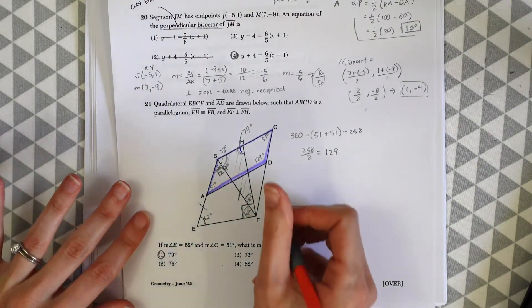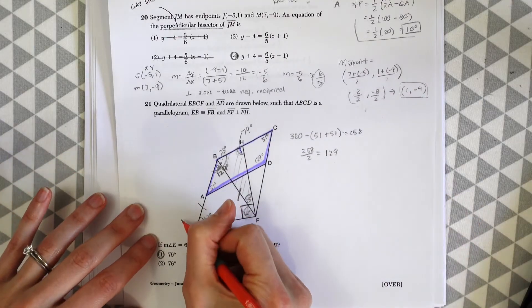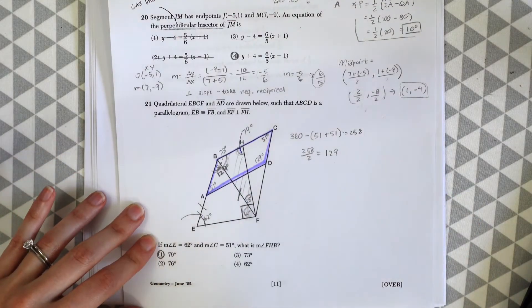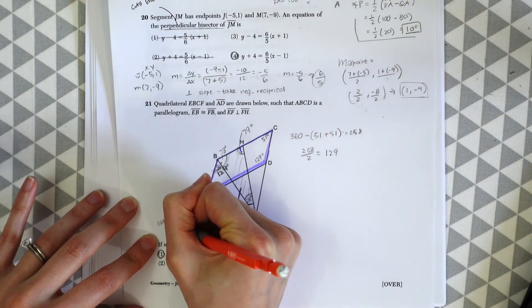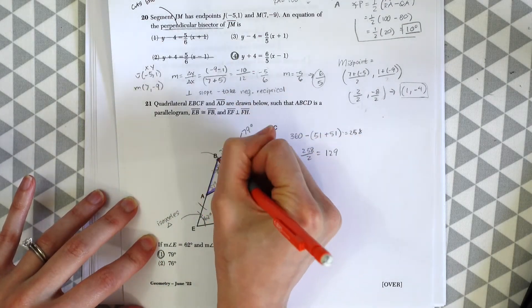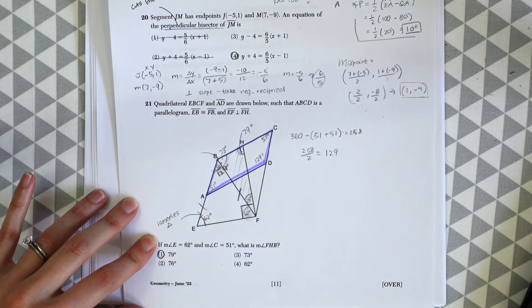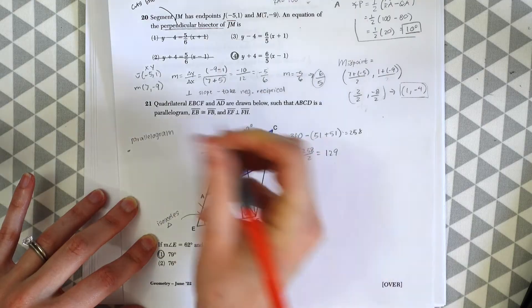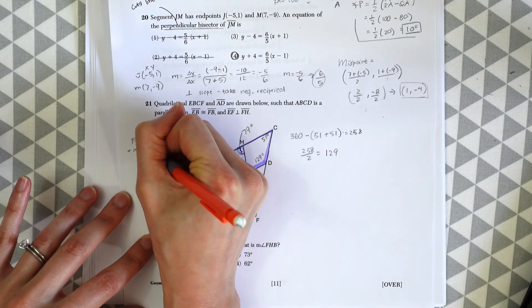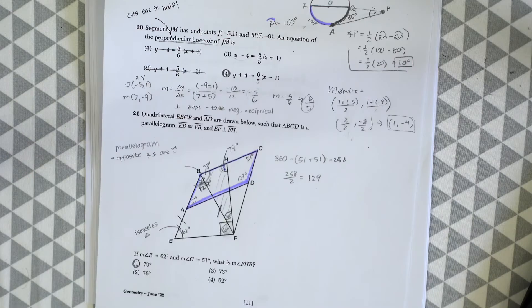To recap how we got this information: this was based on isosceles triangle properties, and the parallelogram rules - opposite angles are congruent. That's our answer.